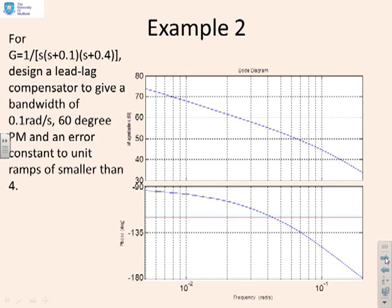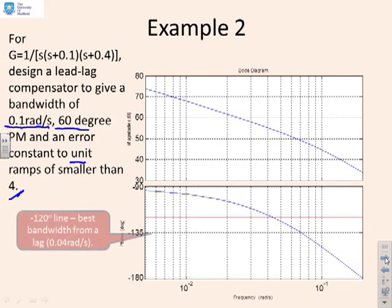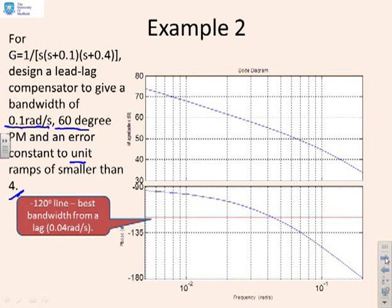Example 2: G = 1 / [s(s+0.1)(s+0.4)]. We want a lead-lag compensator to give a bandwidth of 0.1 rad/s, 60 degrees of phase margin, and a ramp error constant smaller than 4. The minus 120-degree line is marked. The intercept corresponds to roughly 0.04 rad/s, meaning a simple gain design would yield at best 0.04 rad/s bandwidth with a 60-degree phase margin. Since we need 0.1 rad/s, we need a lead to increase the bandwidth.